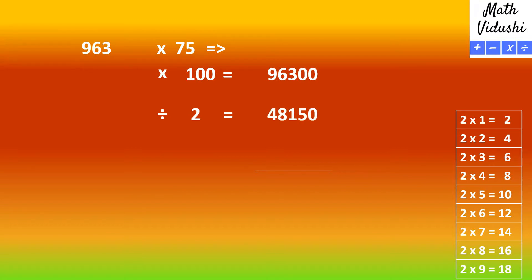Now divide this answer further by 2. So you would get 24,075. Now add these two numbers and you get 72,225.